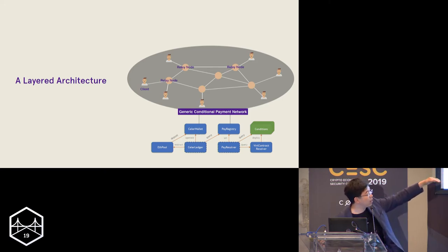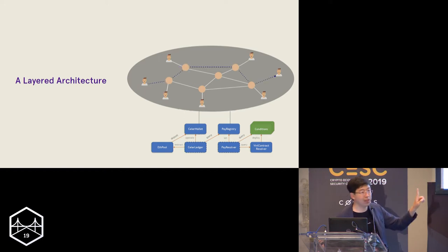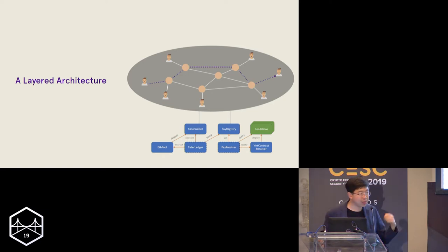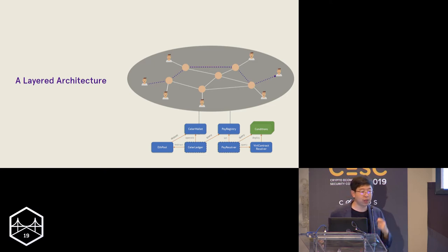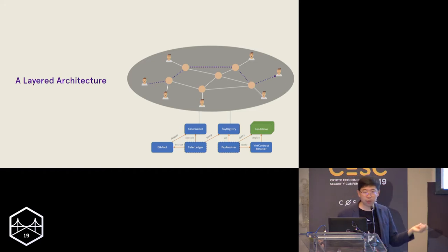If you've heard of Lightning, this layer looks like Lightning but the functionality is very different. In Lightning you can only send very simple payments — just pay Bob. The key difference here is that we enable something called a generic conditional payment. For example, Alice sends Bob five dollars across the network across multiple relay nodes, and this payment can be a conditional payment.